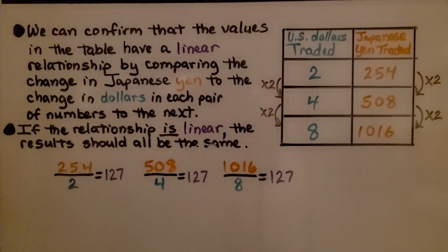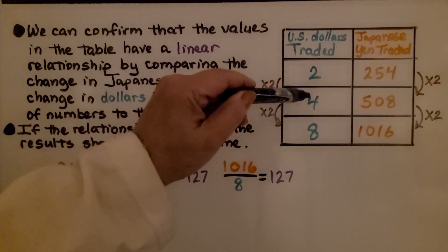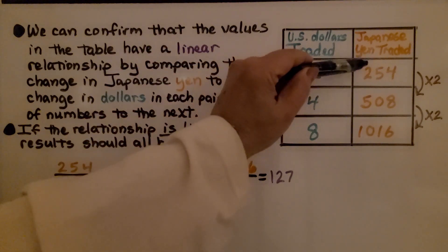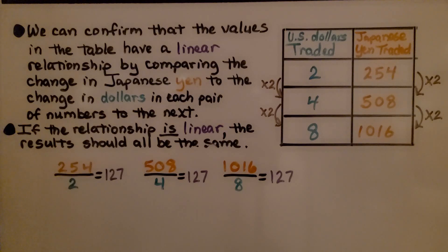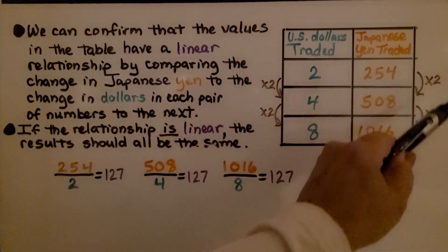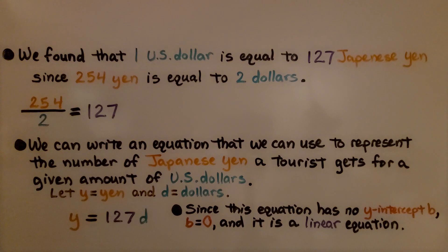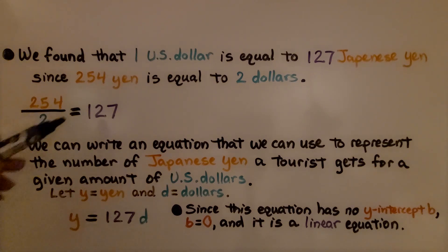We can confirm that the values in the table have a linear relationship by comparing the change in Japanese yen to the change in dollars in each pair of numbers to the next. 2 times 2 is 4 and 4 times 2 is 8. And 254 times 2 is 508 and 508 times 2 is 1016. If the relationship is linear, the results should all be the same. We found that 1 U.S. dollar is equal to 127 Japanese yen, since 254 yen equals 2 dollars. We have 127 as our ratio, our rate of change.